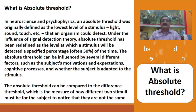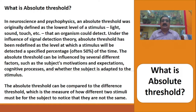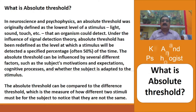The absolute threshold can be influenced by several different factors such as the subject's motivations and expectations, cognitive processes, and whether the subject is adapted to the stimulus. The absolute threshold can be compared to the difference threshold, which is the measure of how different two stimuli must be for the subject to notice that they are not the same.